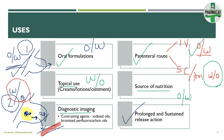Emulsions can also be used as a diagnostic imaging technique. In this, emulsions are incorporated with certain contrasting agents and used for imaging body organs, including X-rays, computed tomographies, and MRI. Examples of contrasting agents include fluorocarbon oils and barium sulfate, which is widely used.